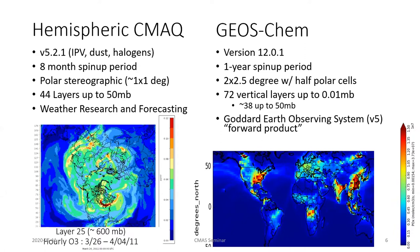We also have sensitivity studies done with GeosChem version 12.0.1, with a one-year spin-up and a 2° by 2.5° structure with half-size polar cells. That system has 72 vertical layers going up to 0.01 millibar — a very different vertical structure. Those runs used the Goddard Earth Observing System forward product, the GEOS-FP meteorology.